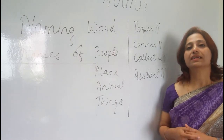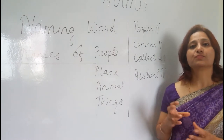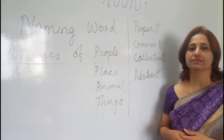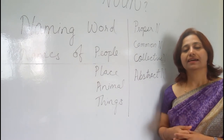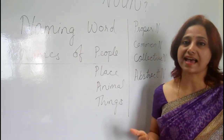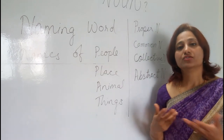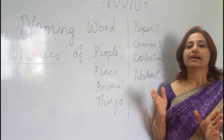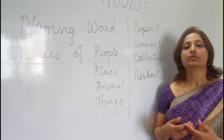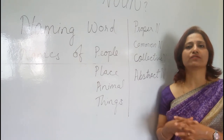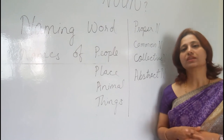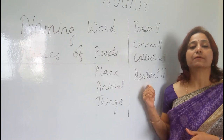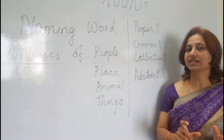An abstract noun is an idea that is specific to a particular person and varies from person to person. Examples are happiness, sadness, freedom, and joy. For instance, today I may be happy with a chocolate, but tomorrow I may not feel the same happiness. So abstract nouns are vague and cannot be precisely defined.